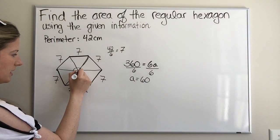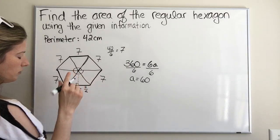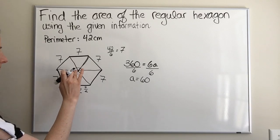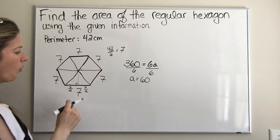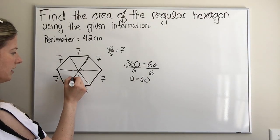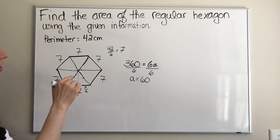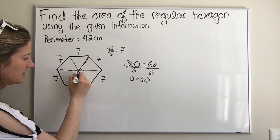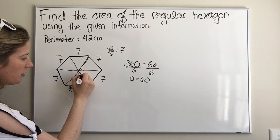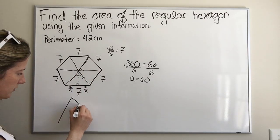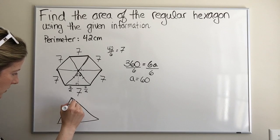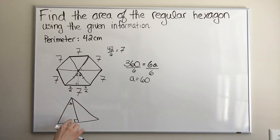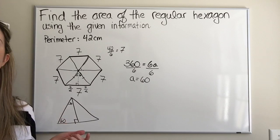So we know this center angle measures 60 degrees. Now, looking at this triangle — when we dropped that altitude, because we created an isosceles triangle, we know that we bisected this angle. So that means this is 30 degrees and this is 30 degrees. We know the right angle is 90. So then this remaining angle must be 60. And look at that — we've got a special right triangle.